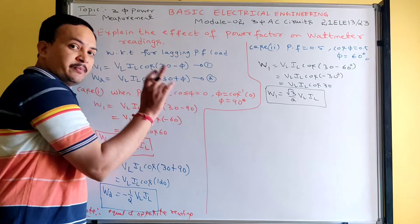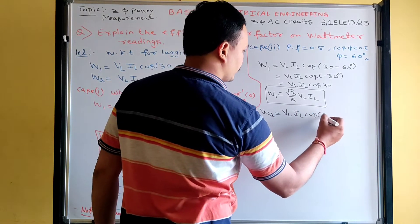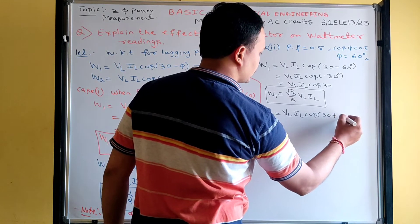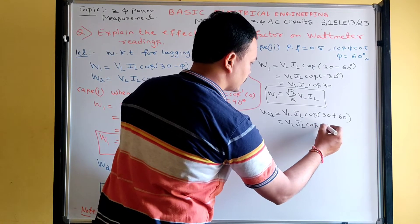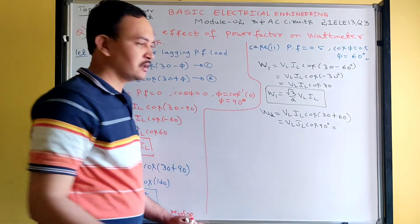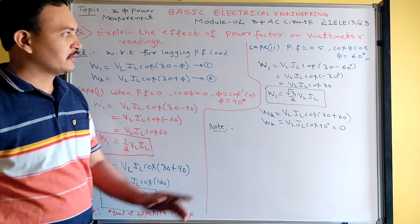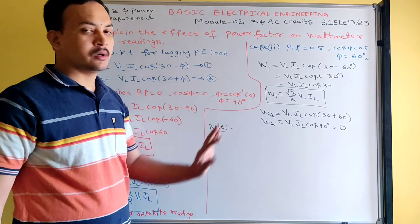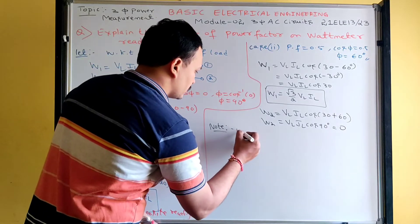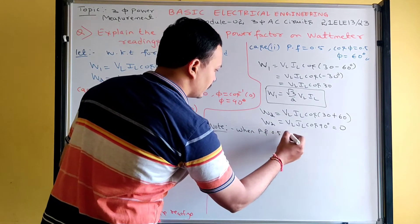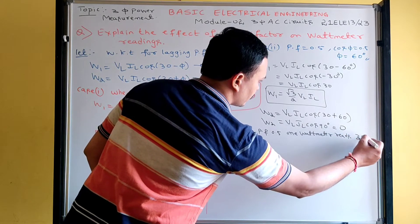Applying φ = 60° in equation 2: W2 = VL·IL·cos(30° + 60°) = VL·IL·cos(90°) = 0. Note point: when power factor is 0.5, one of the wattmeters shows a zero reading. So one wattmeter reads zero when power factor is exactly 0.5.